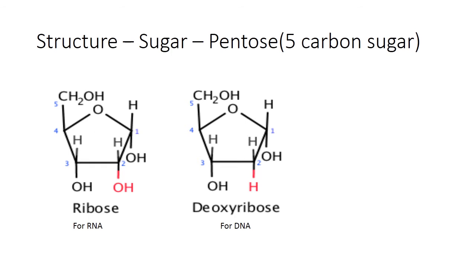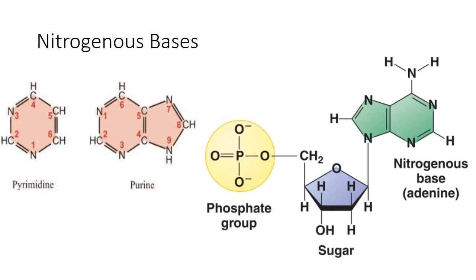Now we will talk about the structure of a nucleotide. First, regarding the sugar: ribose sugar is used for RNA and deoxyribose is used for DNA. This is a five-carbon sugar, which is why we call it a pentose sugar. Additionally, there are nitrogenous bases and a phosphate group attached.